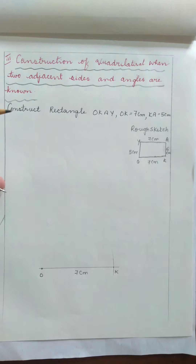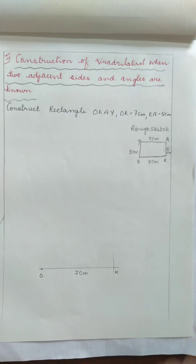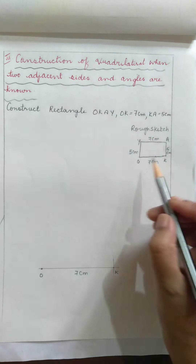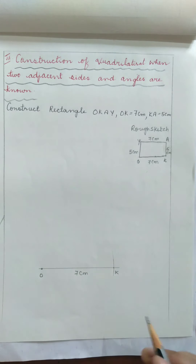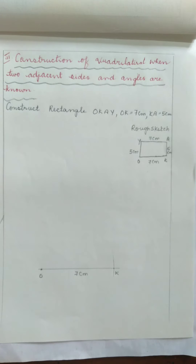Now, we know that at angle O and at angle K the angle is 90 degrees. In the problem, no angle is mentioned, but we know that all angles in a rectangle are equal to 90 degrees. In 8th standard, we will study how to draw a 90 degree angle without using the protractor, by using the compass and scale.